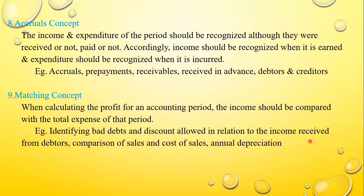Number nine is the matching concept. When calculating the profit for an accounting period, the income should be compared with the total expense of that period. Example: identifying bad debts and discount allowed in relation to income received from debtors, comparison of sales and cost of sales, and annual depreciation. Sales is an income; cost of sales is how much cost you have incurred to gain that sale — that is the matching concept.